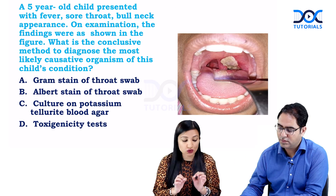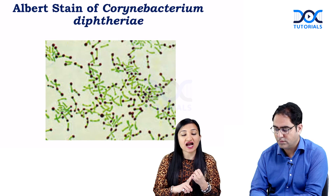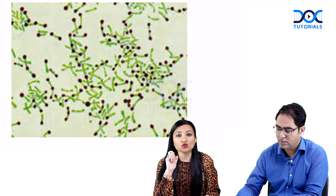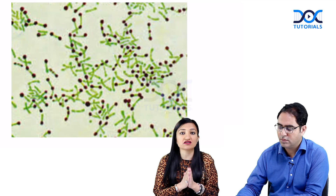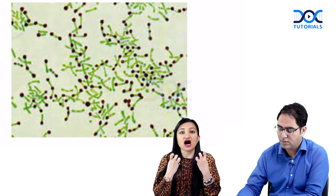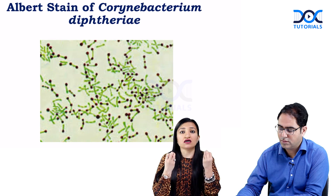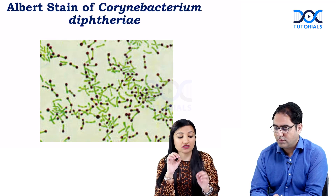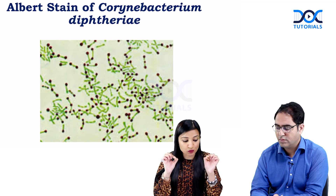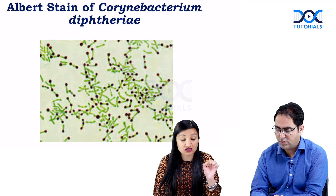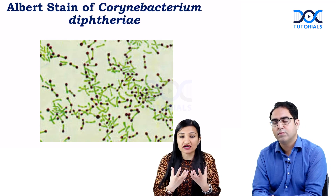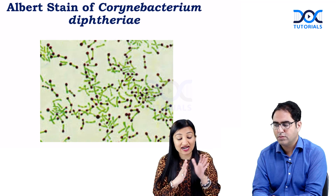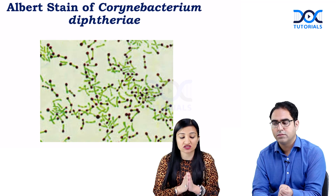Option B is Albert stain of throat swab. Albert stain will look positive for both toxigenic and non-toxigenic strains of C. diphtheriae. Albert stain is specific for this organism and helps visualize what are known as metachromatic granules, also called Babes-Ernst granules, volutin granules, polymetaphosphates, or polar bodies. These granules are located at the poles of the organism and are reservoirs of energy and phosphate. On Albert stain, the bacilli appear green and the granules appear blue, as seen in the picture. These granules are more prominent in nutritionally deficient conditions. Since these granules can be seen in both toxigenic and non-toxigenic strains, option B is also wrong.